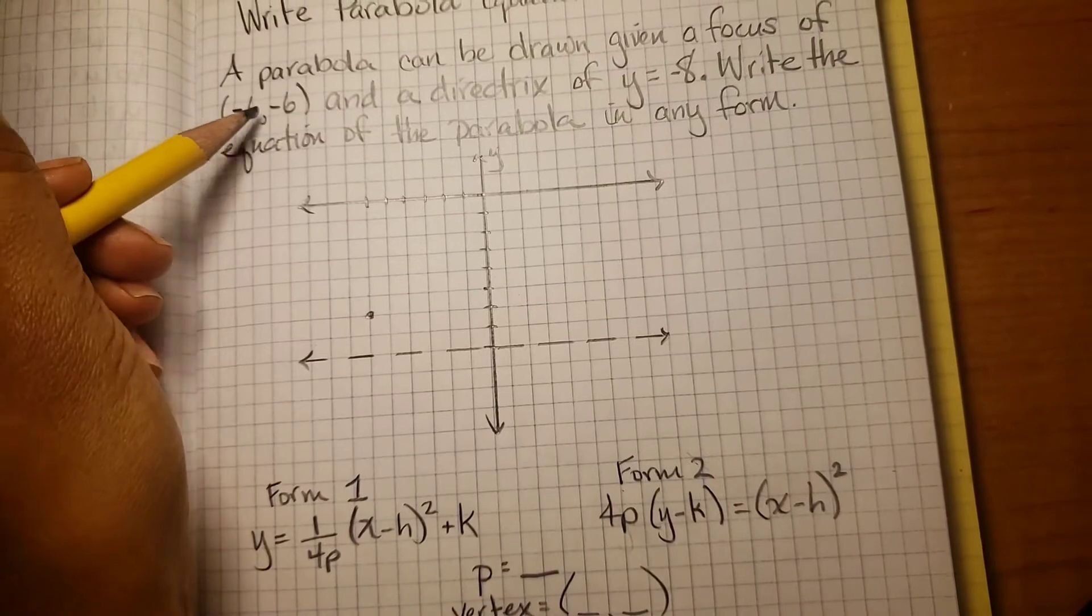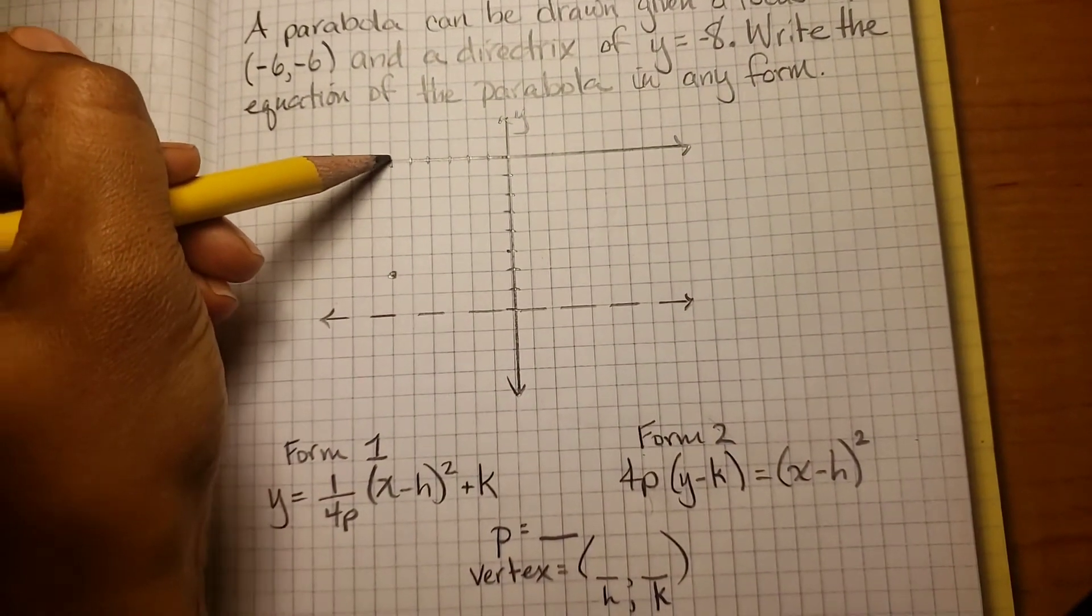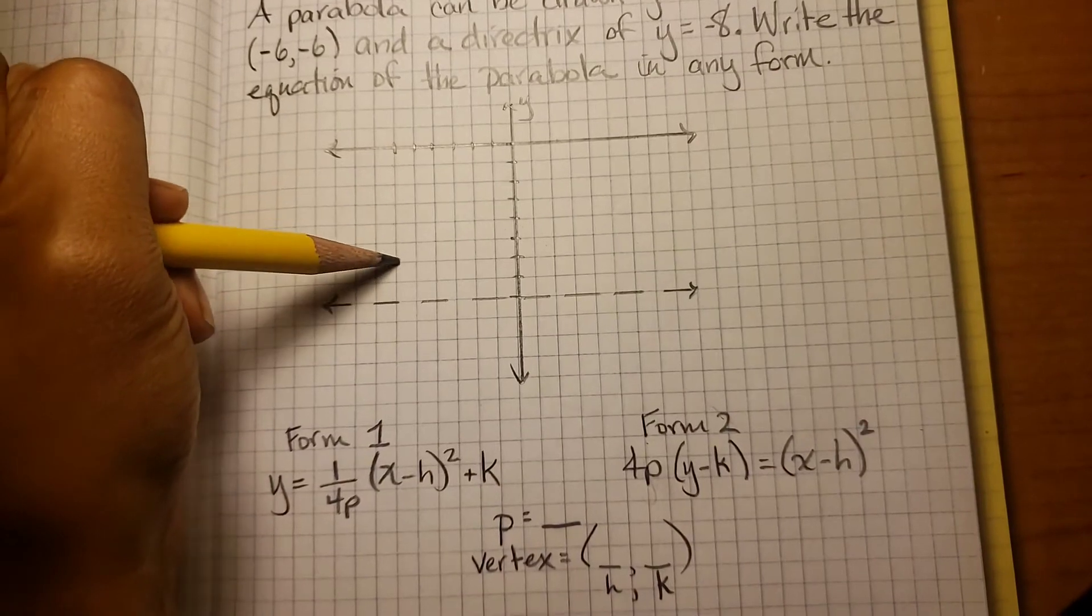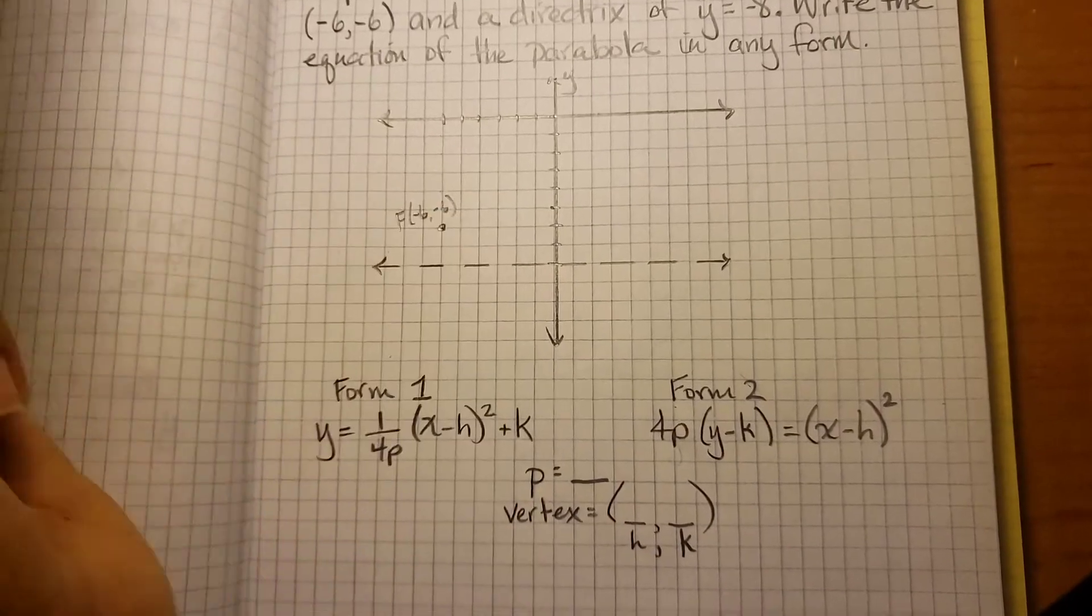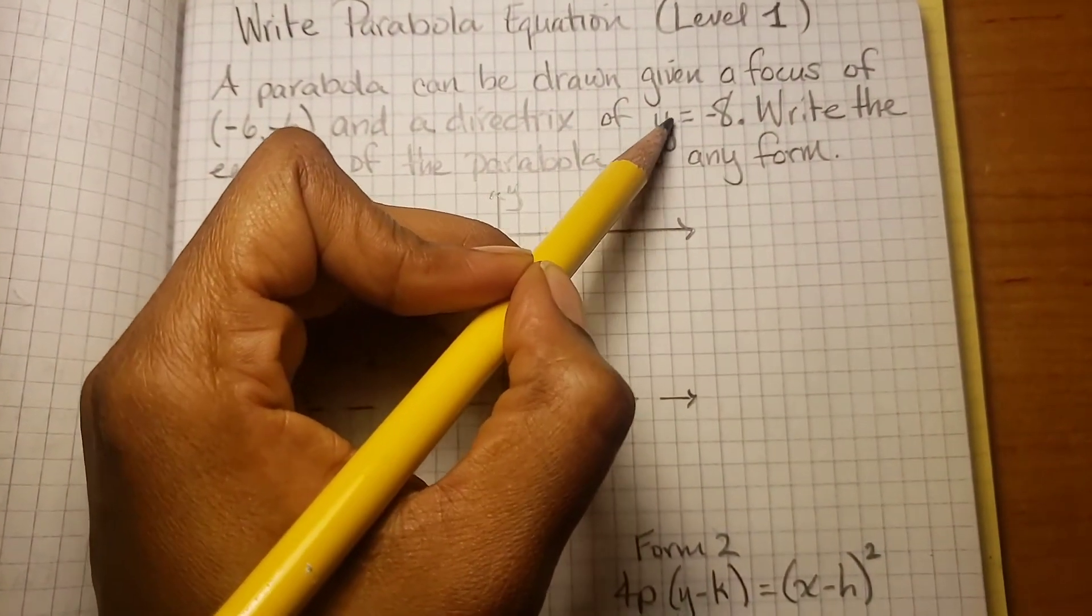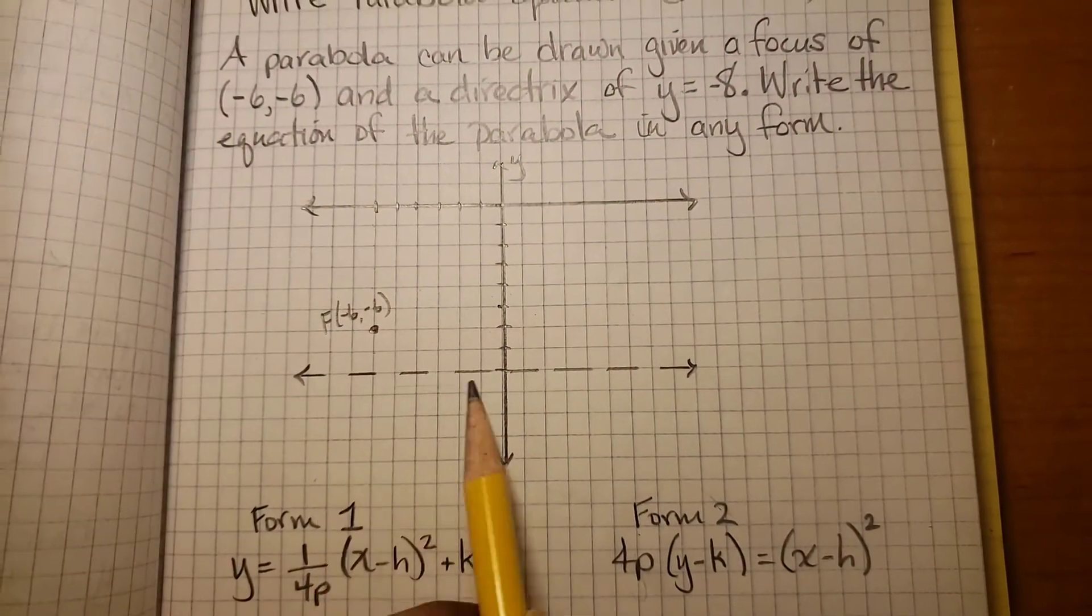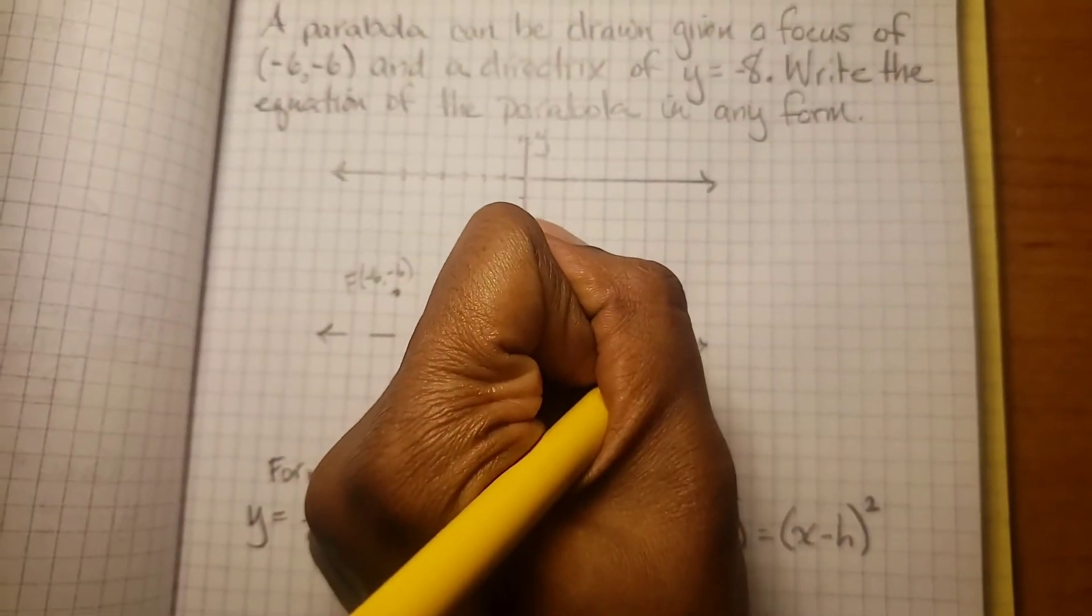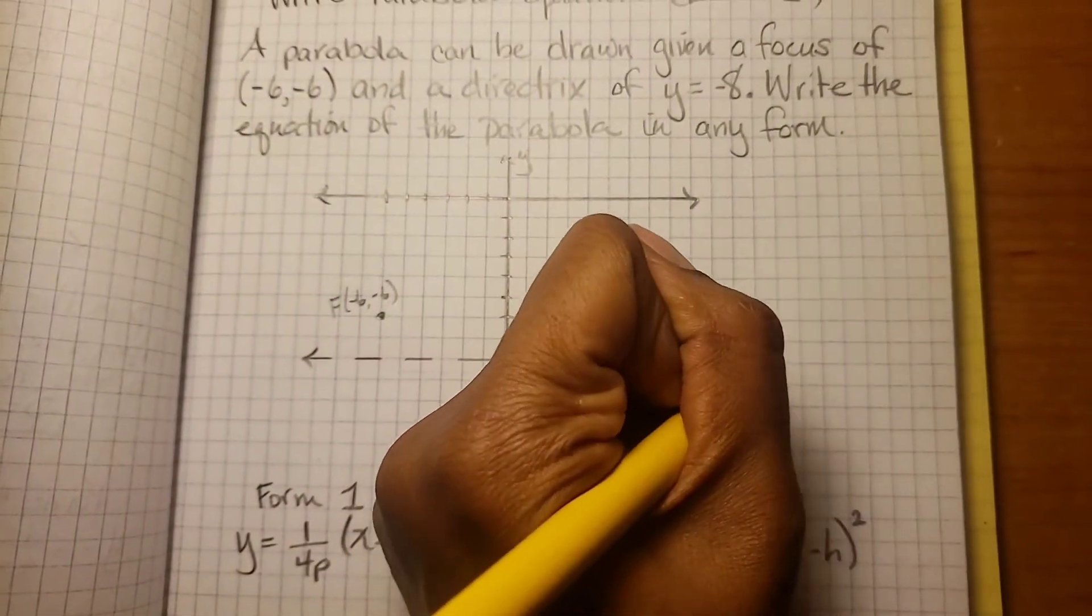So here's (-6, -6). 1, 2, 3, 4, 5, 6. 1, 2, 3, 4, 5, 6. There's my focus, (-6, -6). And my directrix is y = -8. So negative 7, negative 8. There's my directrix, y = -8.